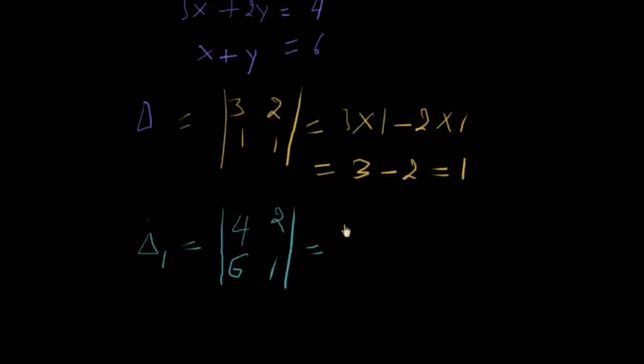4×1 minus 2×6 equals 4 minus 12, which is -8.